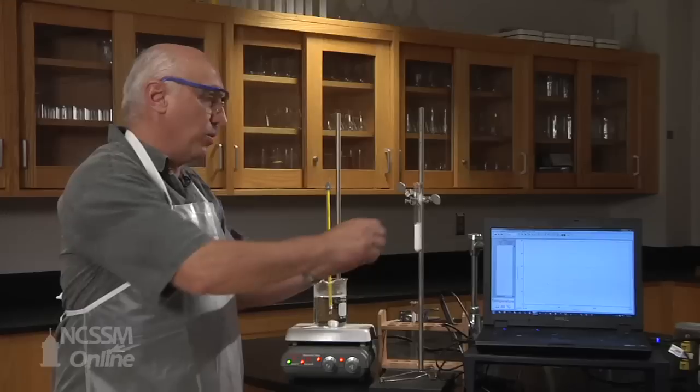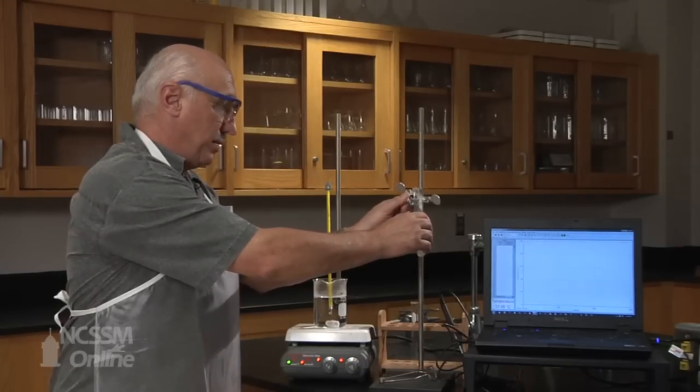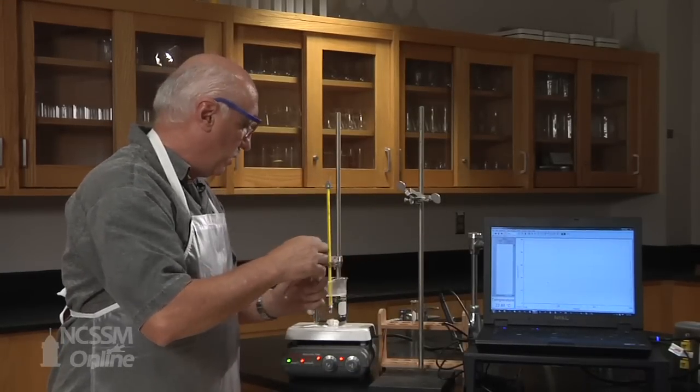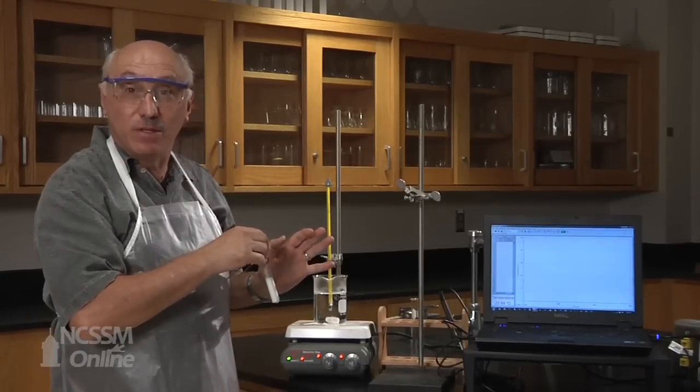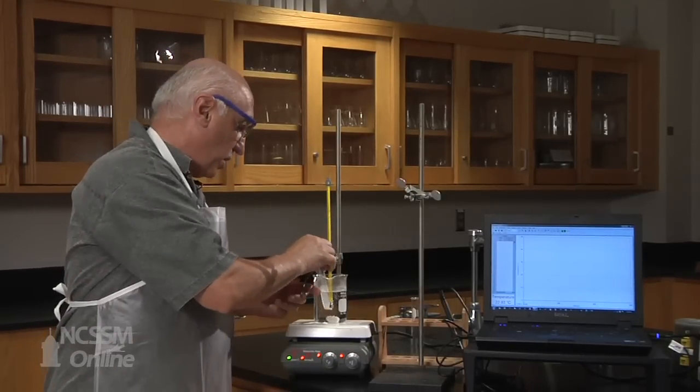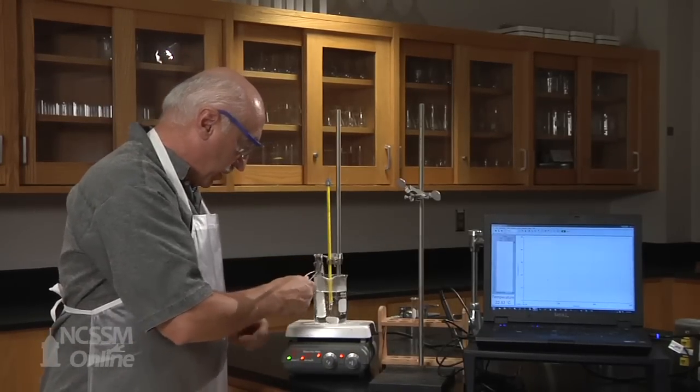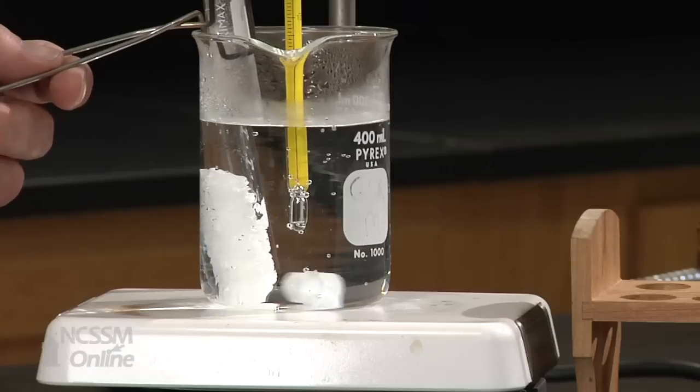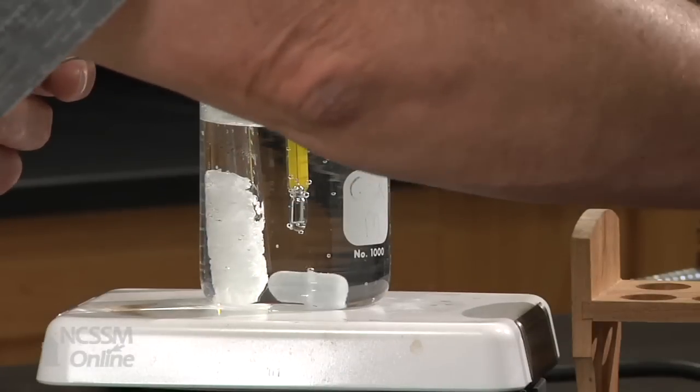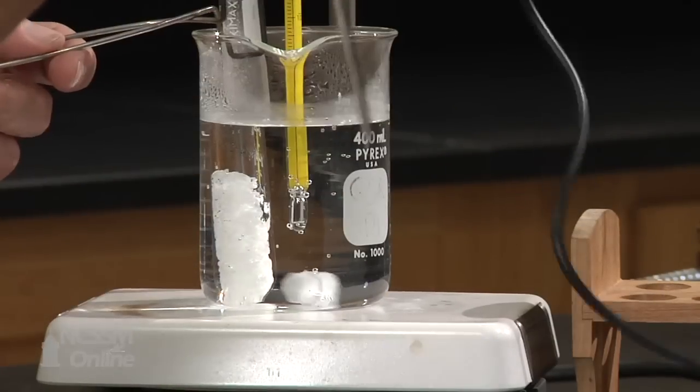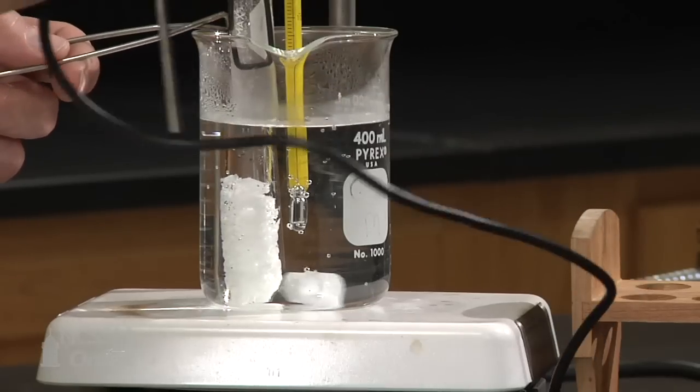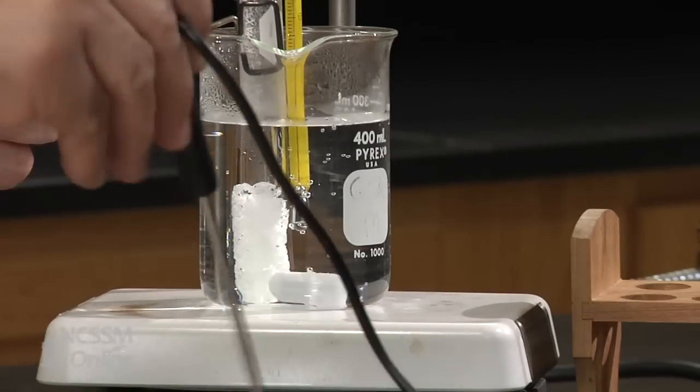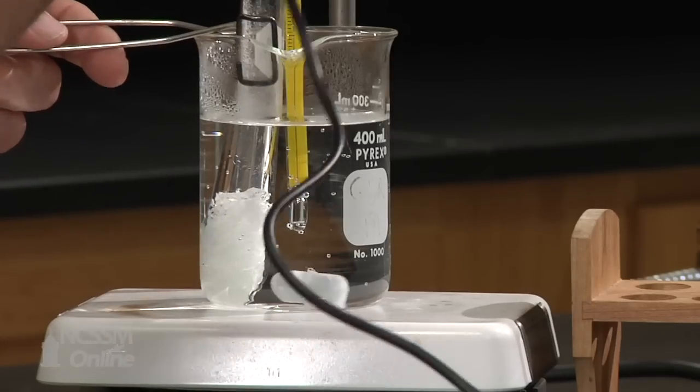Okay, so now we're going to place the lauric acid in the water bath, which is at 61 degrees. And we're going to melt the lauric acid. And we're going to add the temperature probe, which we can use as a stirrer, but being careful, however, that the cord does not touch the hot plate.